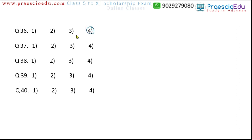Question 37: cycle, tanga, motorcycle, and bullock cart. Motorcycle is an automobile that runs on fuel, but bullock cart, tanga, and cycle do not use fuel. So option three, motorcycle, is the different one. Question 38: milk, grass, egg, and meat. Milk, egg, and meat are animal byproducts, but grass is a plant — not an animal byproduct. So grass is the different one. Question 39: dal rice, pani puri, burger, and pizza. Pani puri, burger, and pizza are fast food, but dal rice is not fast food — it is a regular processed meal. So option one, dal rice, is the different one.